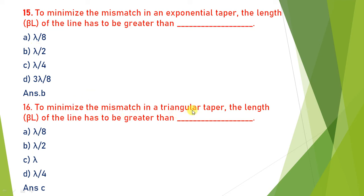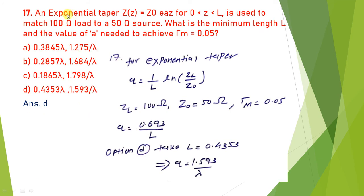Next: to minimize mismatch in a triangular taper, βl must be greater than what? For a triangular taper, βl is always greater than π. With β = 2π/λ, this means l must be greater than or equal to λ. So for exponential taper βl > λ/2, and for triangular taper βl > λ.